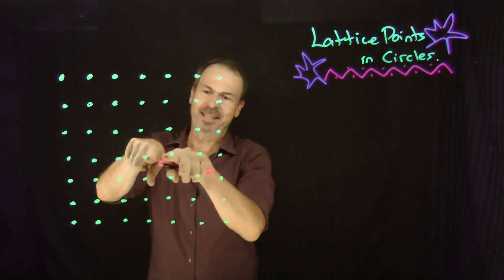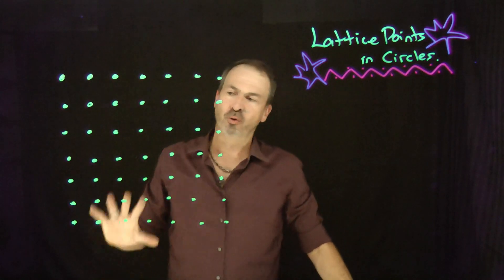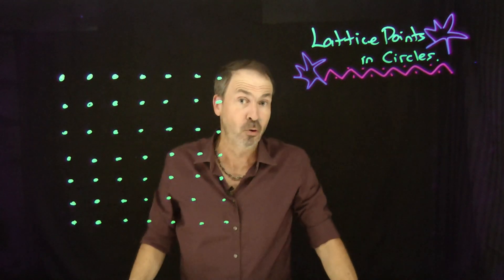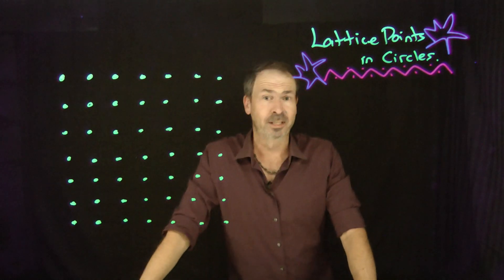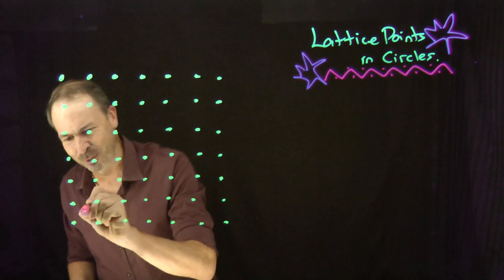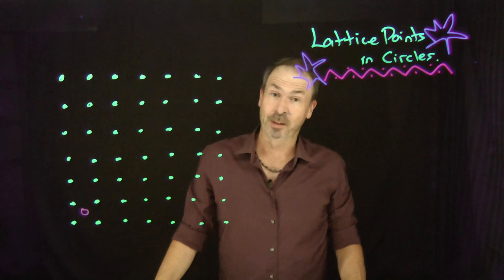I've drawn here a square array of lattice points — all at corners of a square, one unit apart vertically and horizontally. What I'd like to do is draw circles on this plane that avoid going through lattice points, but I want my circles to actually contain some on the interior. For example, I could draw a circle that contains zero lattice points — a little tiny circle would do the trick, with no lattice points on its inside. I could also draw a circle that contains exactly one lattice point.